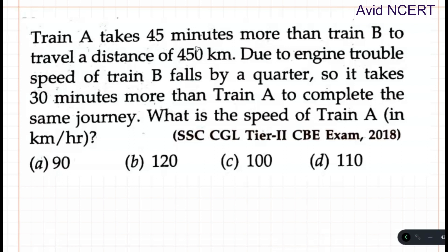Train A takes 45 minutes more than train B to travel a distance of 450 km. Due to engine trouble, the speed of train B falls by a quarter, so it takes 30 minutes more than train A to complete the same journey. What is the speed of train A in km per hour?